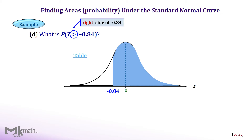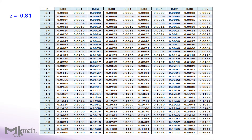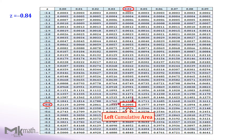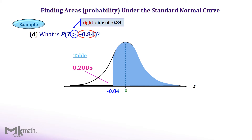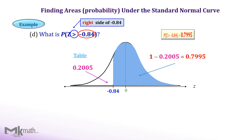Let's look up the table using minus 0.84. We need to find the left cumulative area to z equal minus 0.84. First, locate the first two digits of the z-score as minus 0.8, and then locate the second decimal place of 4 from the top row. The intersection of those values is the left cumulative area to z equal minus 0.84, which is 0.2005. However, our desired area is to the right of z equal negative 0.84. Since the whole area under the normal curve is 1, we subtract the left area from 1 to get the right area. So the area to the right of z equal minus 0.84 is 0.7995.